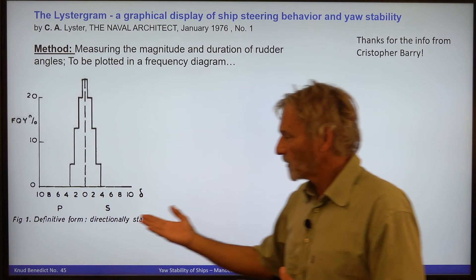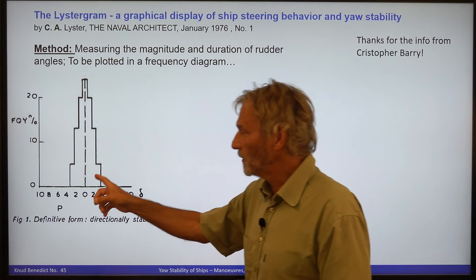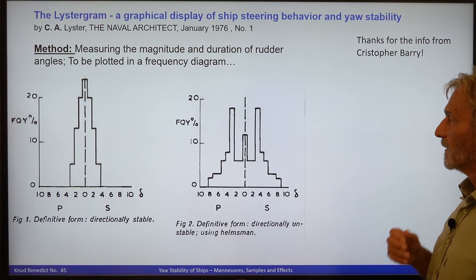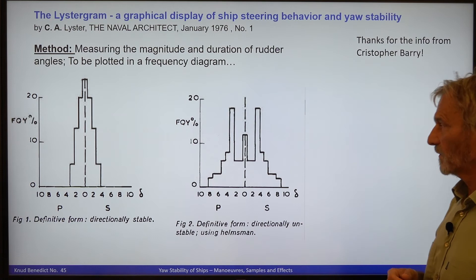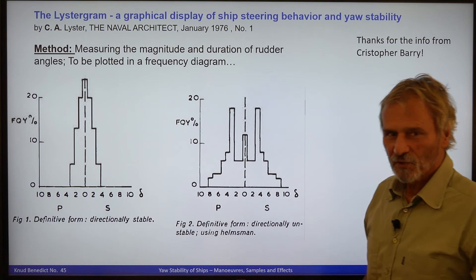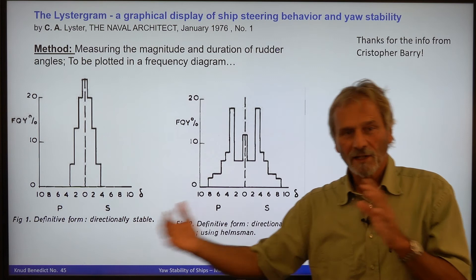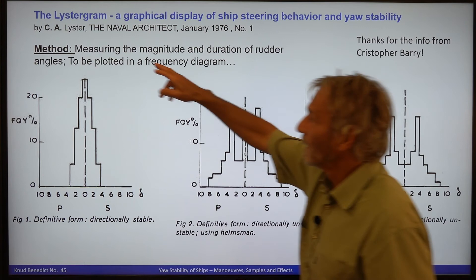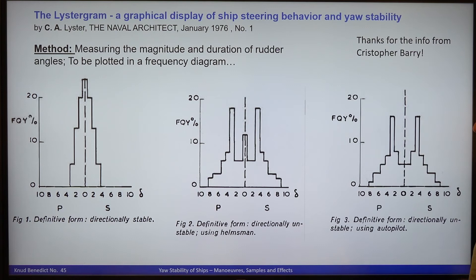What you see here is a directionally stable ship because you only need one rudder angle — there is one peak showing you always need to steer around midship, so no rudder angle of neutral effect. I got this information from a paper in the Naval Architect from January 1976, where Mr. Lister described the method.